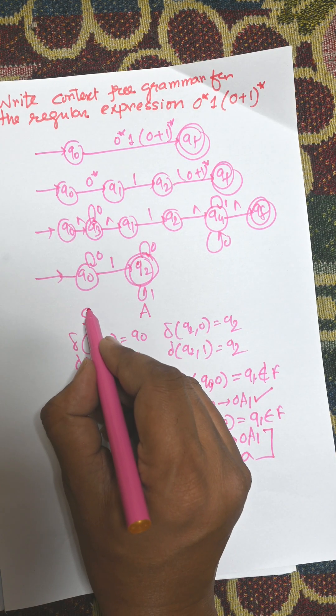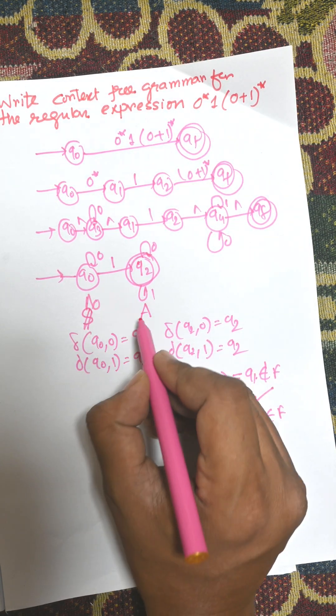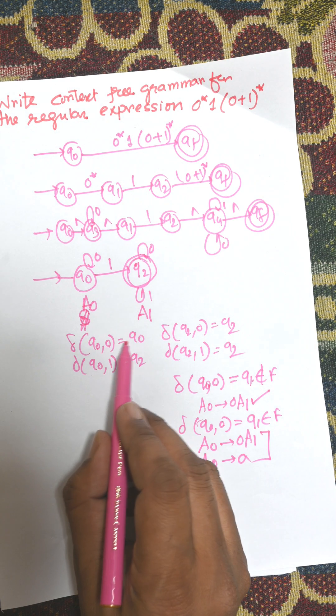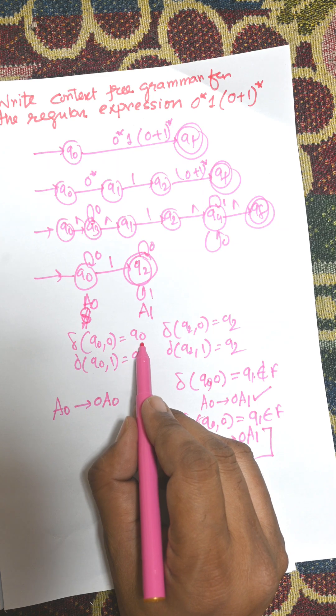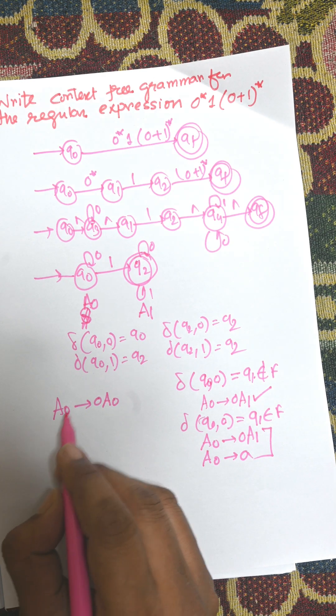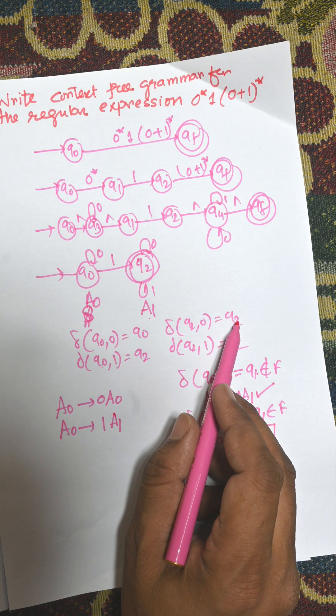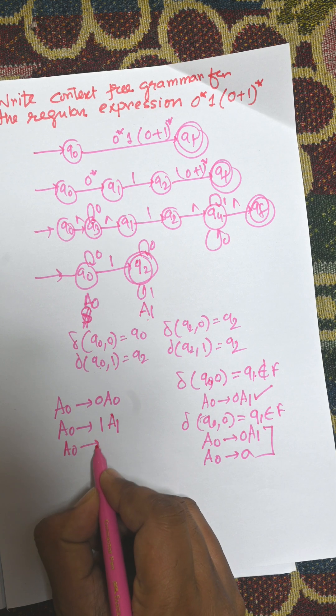We can consider this one as A0 and this one is A1. Q0 to 0 to Q0, that means A0 to 0 A0. As it is not a final state, there is only one production. Now for this Q2 to 0 Q2, and here there is another production, that is Q0 to 1.